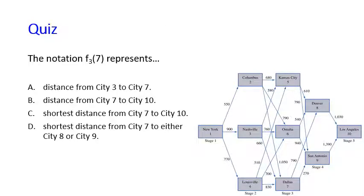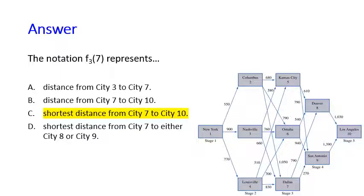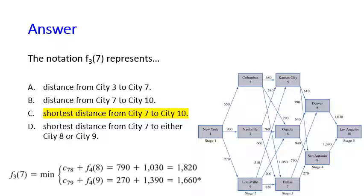Here are some questions to check your understanding. The first question: what does the notation f(3,7) represent? The correct answer is C — the shortest distance from city 7 to city 10. Based on the computation, f(3,7) calculates the distance from city 7 to either city 8 or city 9, plus the remaining distance from there to Los Angeles — so from city 7 all the way to city 10.